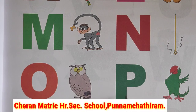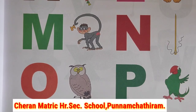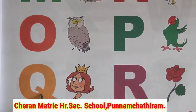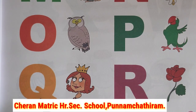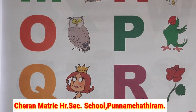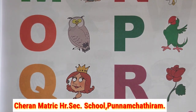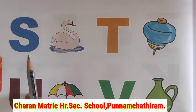O after P. P, parrot. P after Q. Qu, queen. Q after R. R, rose. Turn next page, children.